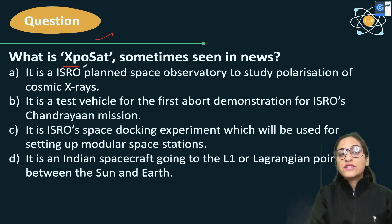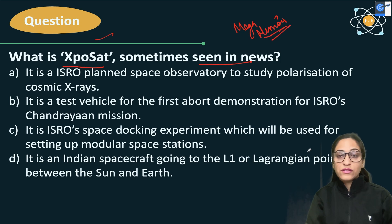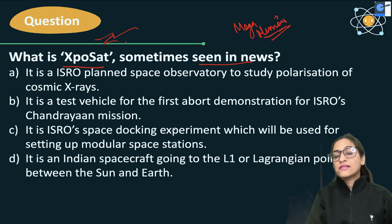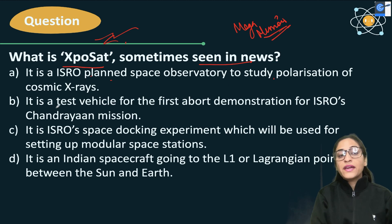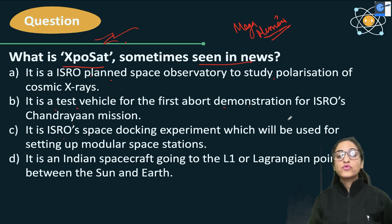Now another question for you: what is XPoSat, sometimes seen in the news? Options are: A) ISRO planned space observatory to study polarization of cosmic X-rays; B) a test vehicle for the first abort demonstration for ISRO's Chandrayaan mission; C) ISRO space docking experiment to be used for setting up modular space stations; D) an Indian spacecraft going to L1, the Lagrange point between the Sun and Earth. Pause and answer.